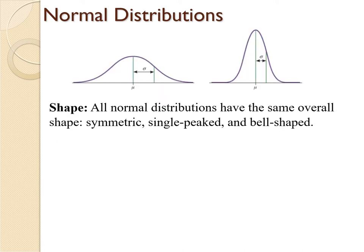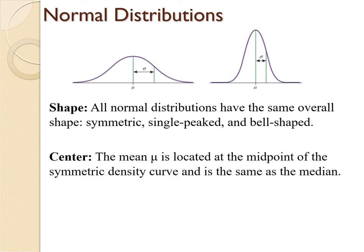There are infinite number of normal distributions. There's one standardized normal distribution where the mean is zero and a standard deviation is one. But it's a normal distribution if we're talking about the heights of males or the weights of elephants or GPAs or SAT scores. The shape of all these distributions are going to be symmetric, single-peaked, and bell-shaped. The center, the mean, is going to be at the midpoint of that symmetric curve, right in the middle. And since it's approximately symmetric, it'll be the same as the median.